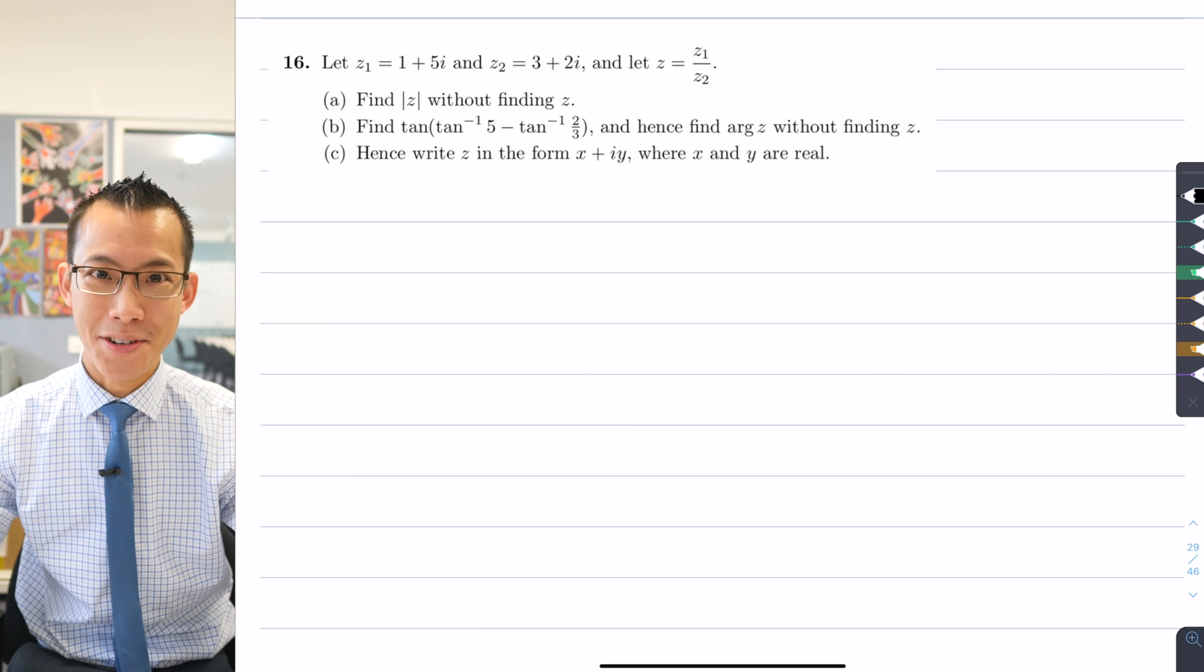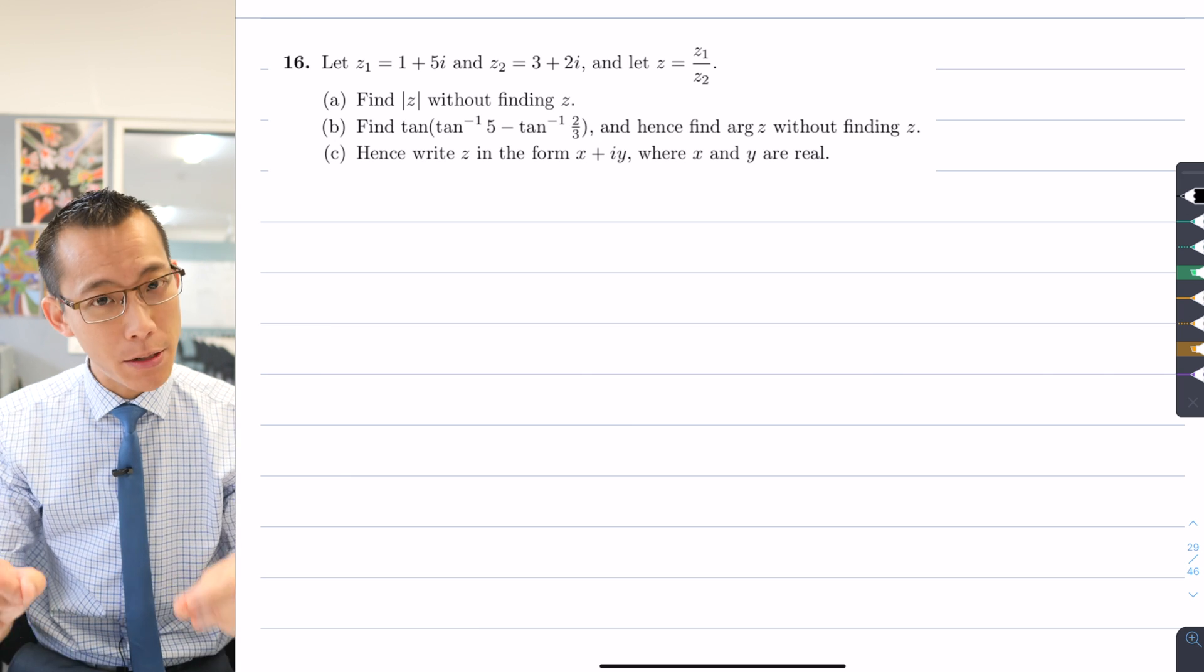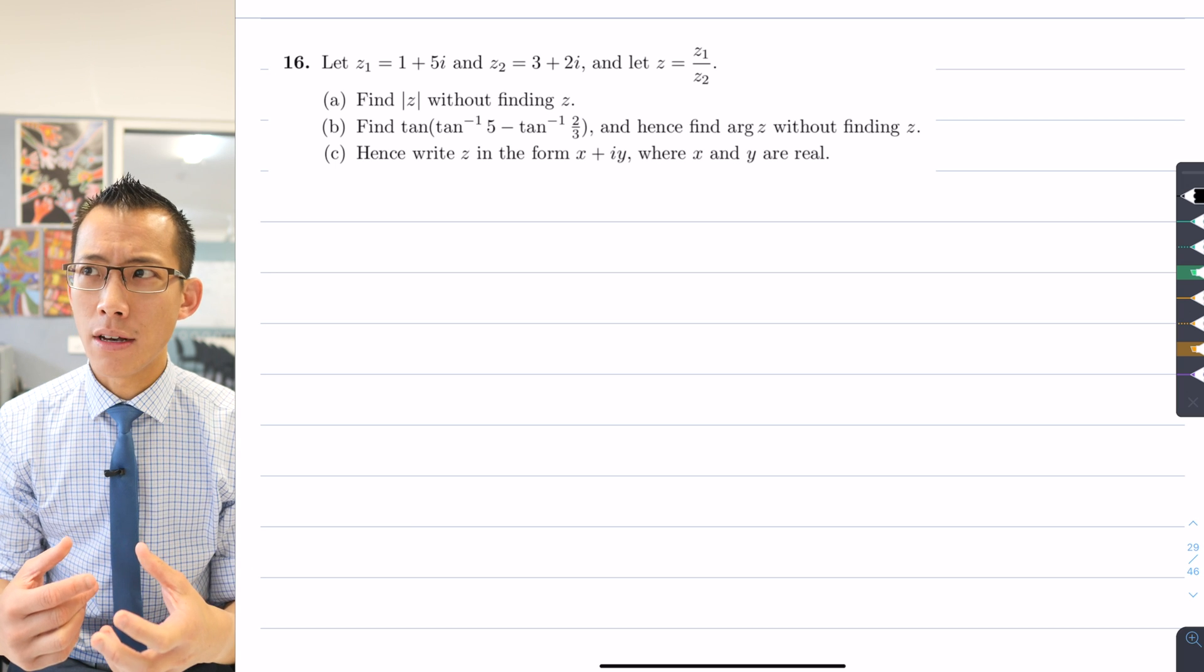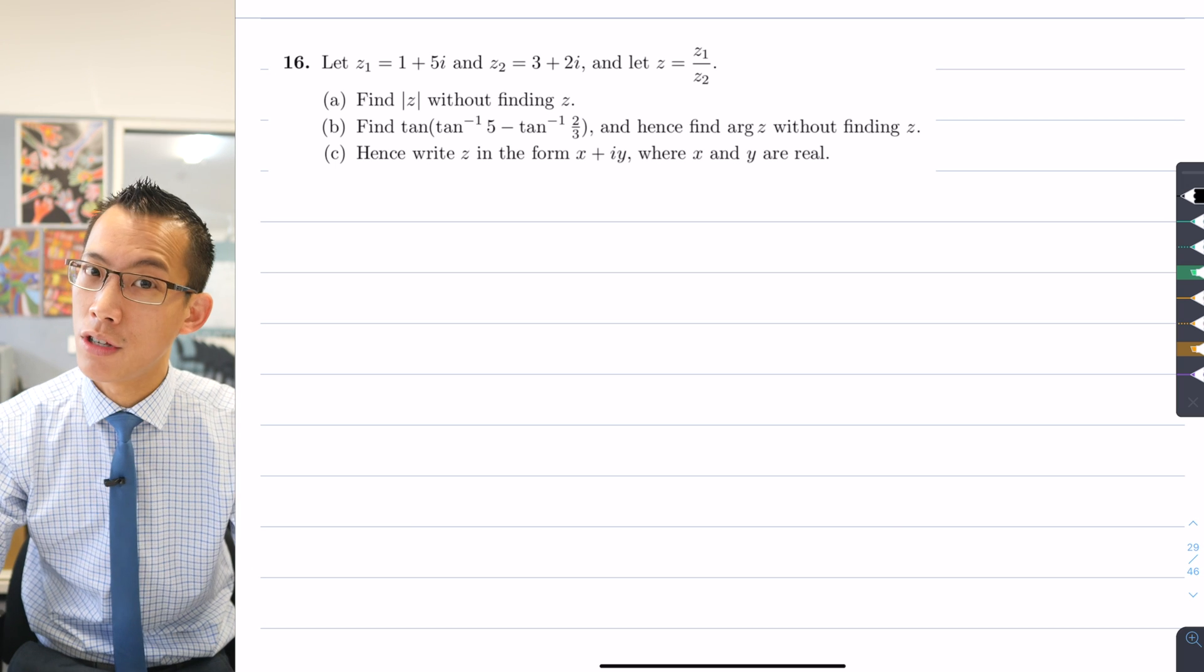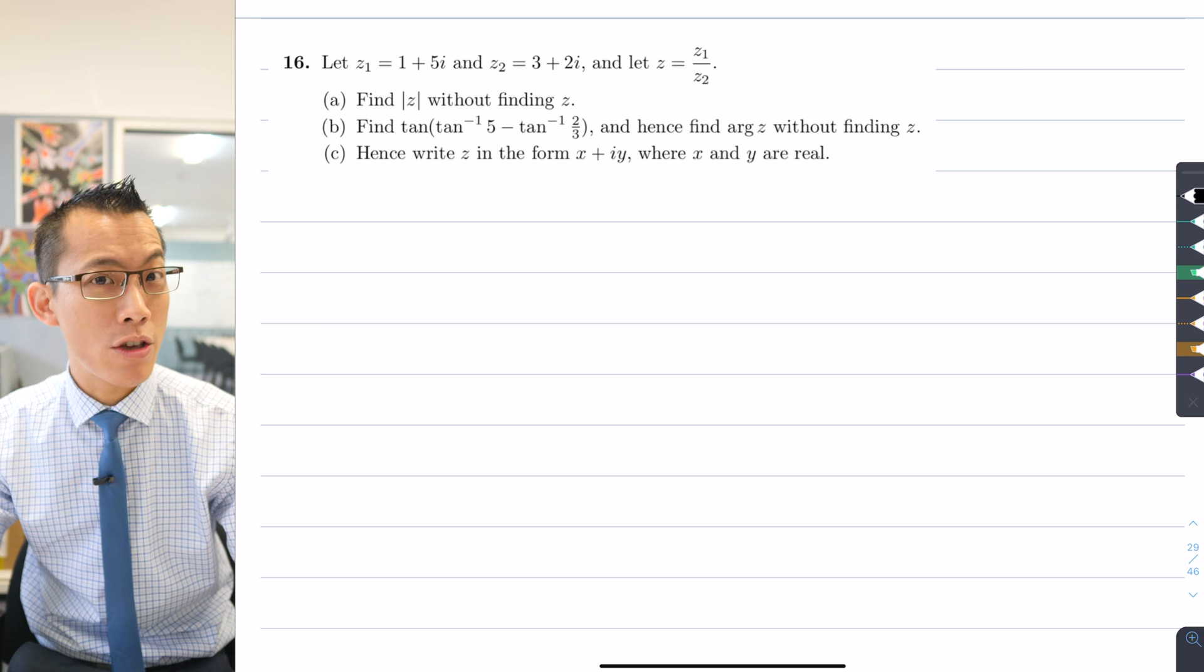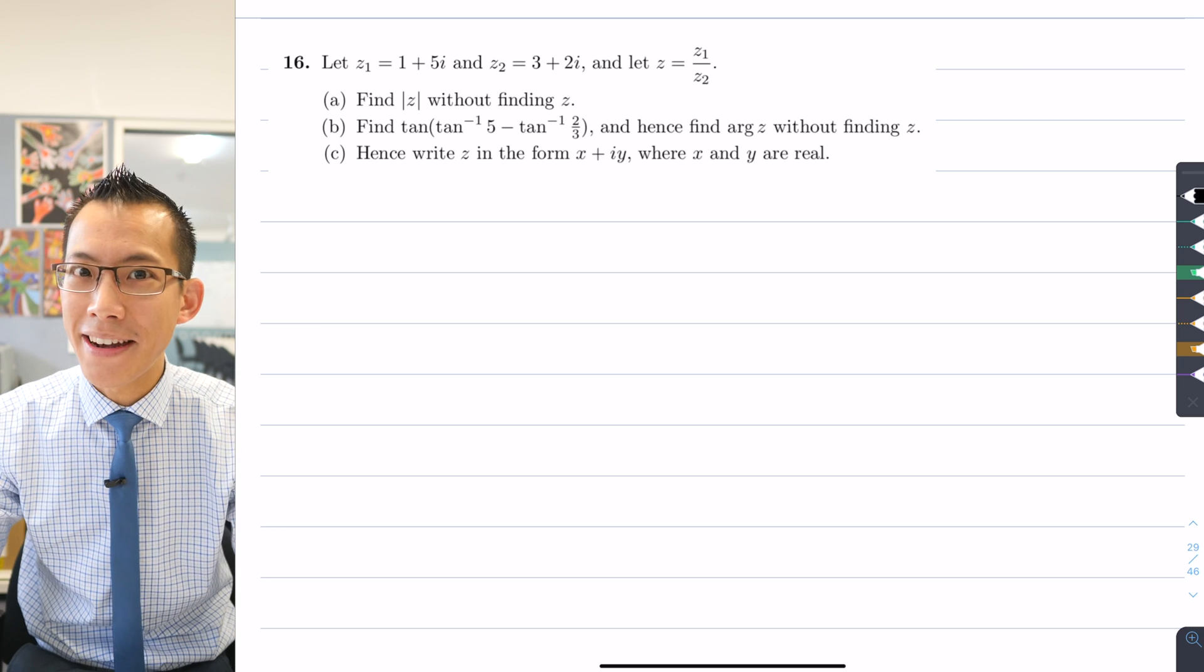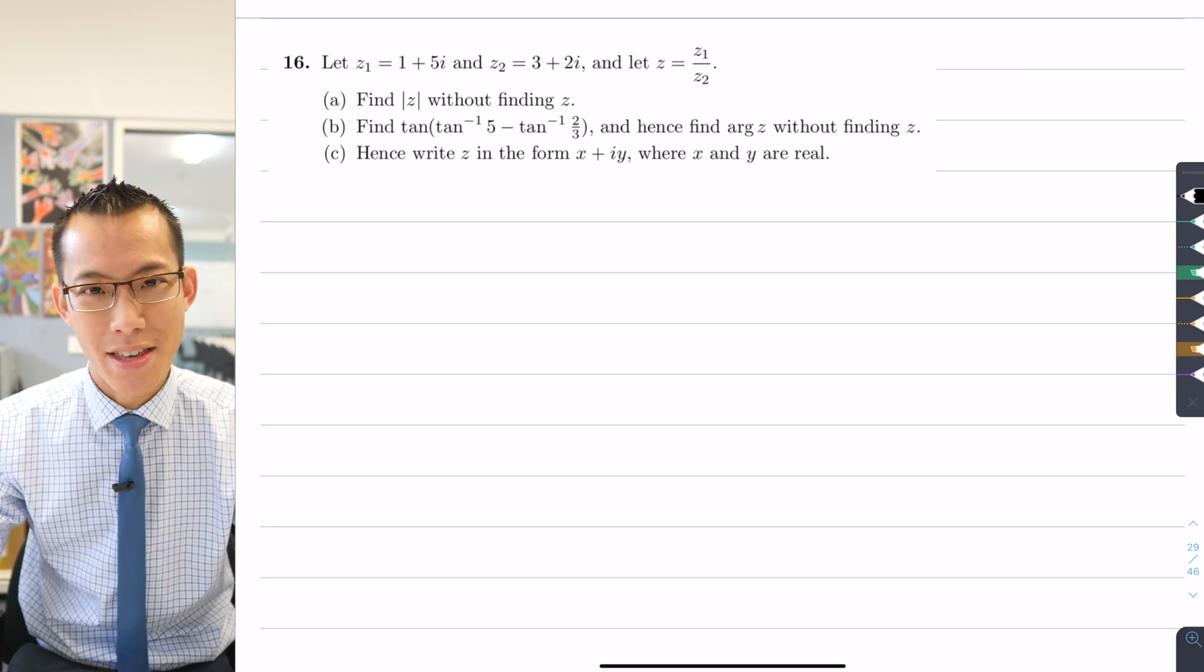Each one has its own unique strengths and advantages, and this particular question tries to bring out some of the situations where you might want to use polar form or rectangular form depending on what kinds of things you're doing with these complex numbers.